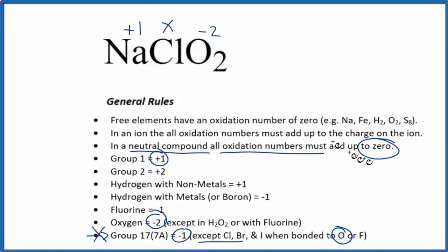But we do know that all of this adds up to zero, so we can make an equation. One plus X minus two, and we have two of those oxygens, so we multiply that by two, that equals zero.